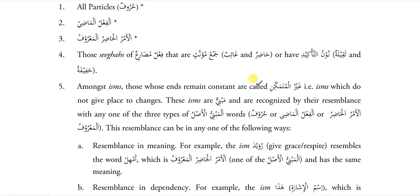Just remember: there are four types of Mabni. One — all Harf are Mabni. Two — all 14 Sega from Wahid Muzakkar Gaib to Wahid Jamaa Mutakallim are Mabni in Mazi. Three — Fail Amr Hazir Maruf is Mabni. Four — Fail-e-Muzareh, the Sega of Jamaa Muannas Gaib and Hazir, are both Mabni. Amongst isms, those whose ends remain constant are called Gairu Mutamakkinin — isms which do not give place to change. These isms are Mabni and are recognized by their resemblance with any of the other three types of Mabniyu Asil.